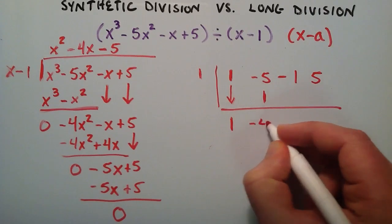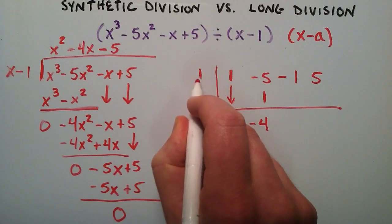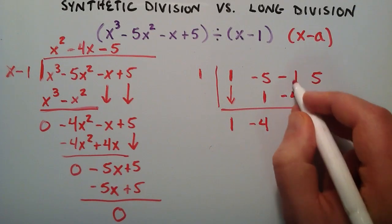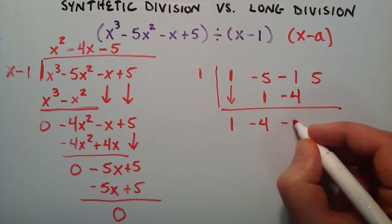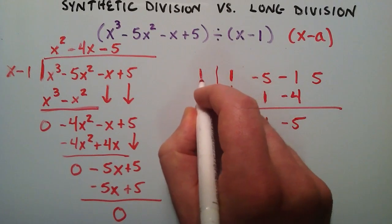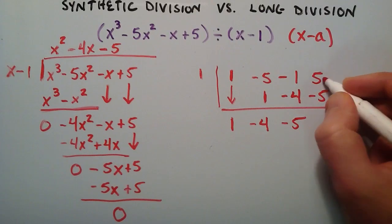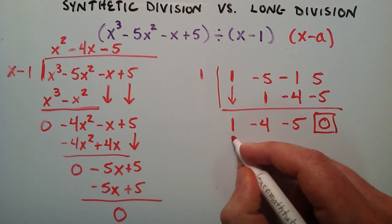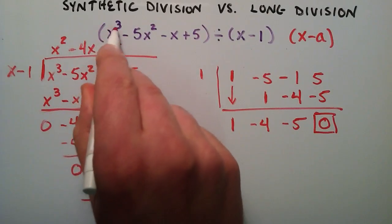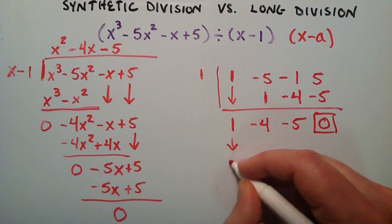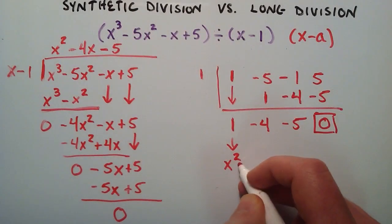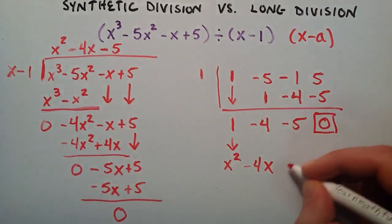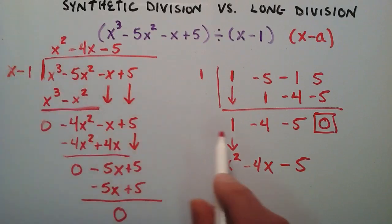Then we take our negative four and multiply it by our a term, which is one: negative four times one is negative four. We write that here. Adding these two together: negative one plus negative four is negative five. Then negative five times one is negative five. Five plus negative five is zero — this would be our remainder term. Basically these are the coefficients of our result. We started with x to the third, so each term is one degree less: this one corresponds to x squared, negative four to x, and negative five is the constant. So this is x squared minus four x minus five, the same answer we got with long division.